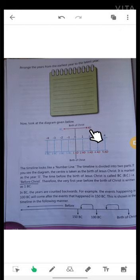The timeline looks like a number line. The timeline is divided into two parts. If you see the diagram, the center is taken as the birth of Jesus Christ. It is marked as the year zero.